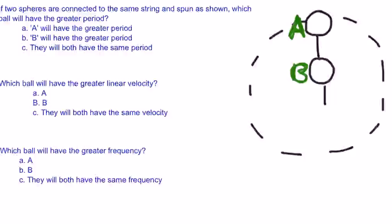If two spheres are connected to the same string and spun as shown, which ball will have the greater period? The answer is C, they'll both have the same period due to the fact that they're both connected to the same string.